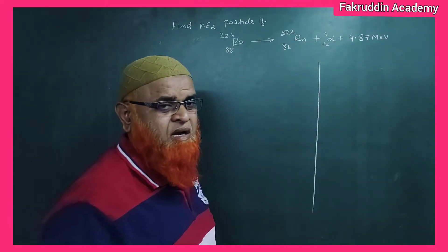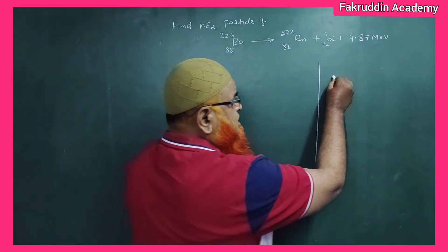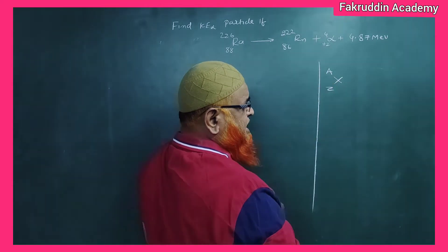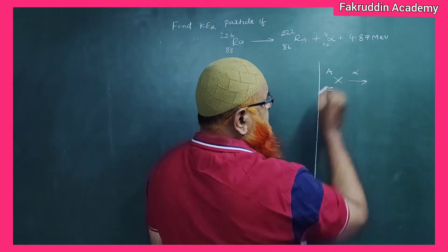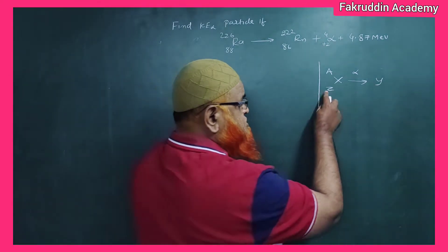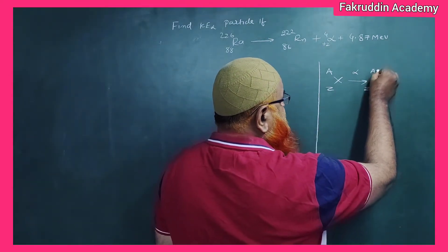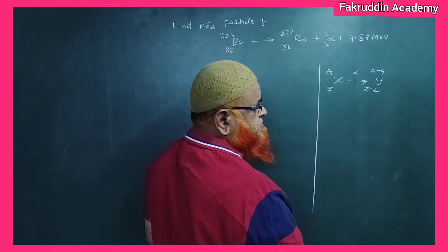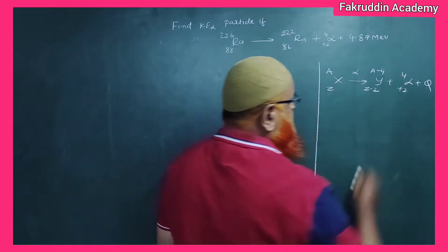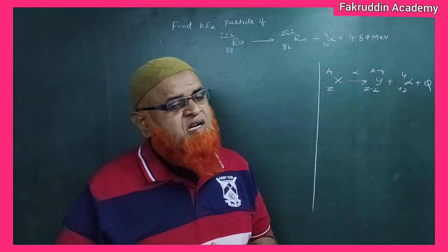Let me give you one small example to understand this concept. Whenever a parent nuclei having atomic number Z and mass number A gives rise to an alpha particle, it becomes a daughter nuclei whose atomic number reduces by 2 units and mass number reduces by 4 units, along with a certain amount of heat energy released.